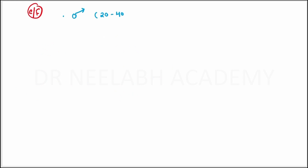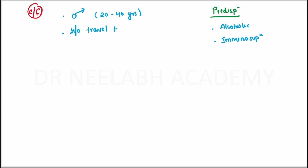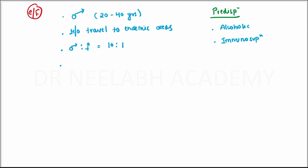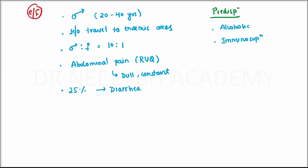These patients are generally middle-aged men ranging from 20 to 40 years, with predisposing conditions like alcoholism or being immunosuppressed. They also have a history of travel to endemic areas. The male to female ratio is generally 10 to 1. The most common symptom is abdominal pain in the right upper quadrant, which is dull and constant. 25% of patients present with diarrhea. Some present with anorexia and weight loss, and very rarely with jaundice.